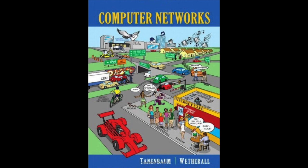Section 6.1 covers the transport service. We will provide an introduction to the transport service and look at what kind of service is provided to the application layer. To make the issue more concrete, we will examine two sets of transport layer primitives. The ultimate goal of the transport layer is to provide efficient, reliable, and cost-effective data transmission service to its users, normally processes in the application layer.